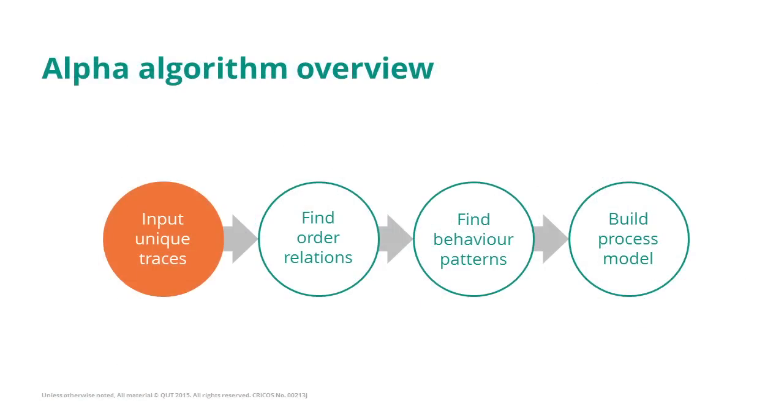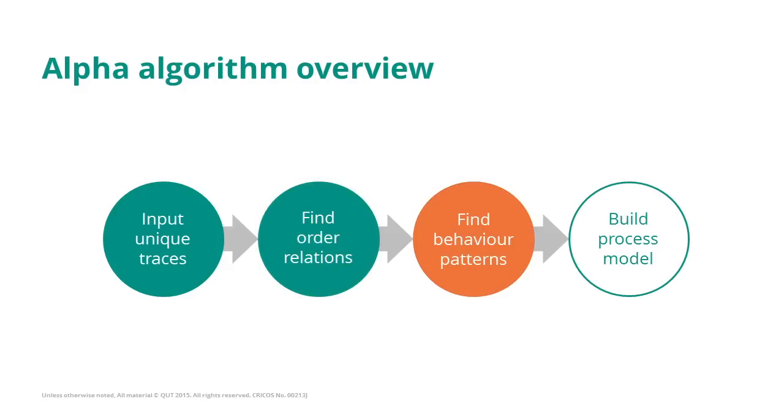This slide gives an overview of the alpha algorithm. The input to the alpha algorithm is a set of unique traces. From the set of unique traces we try to identify order relationships. These order relationships provide us with the basis such that we can identify patterns in them and these patterns eventually help us to construct a process model.